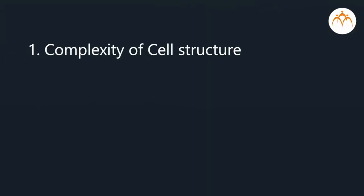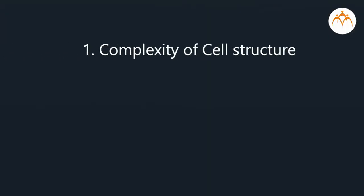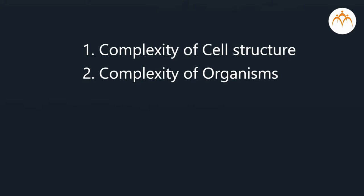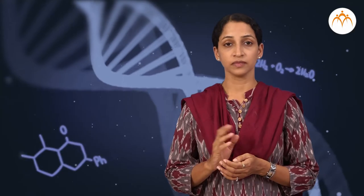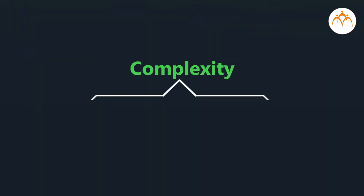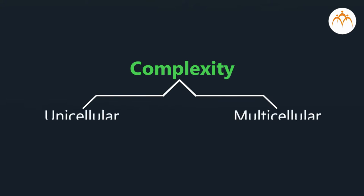So students, Whitaker has made two basic groups of organisms: prokaryotes and eukaryotes. Now, the second parameter used by Whitaker is complexity of organisms. It means whether organisms are made up of one or many cells. There are two types: namely unicellular or multicellular.